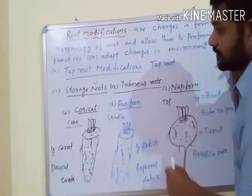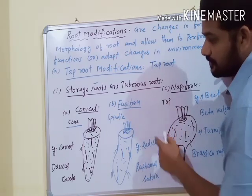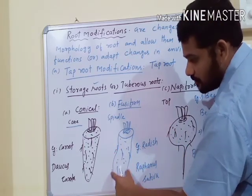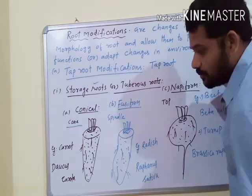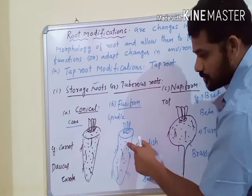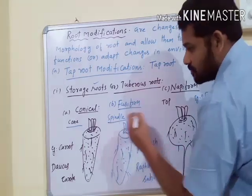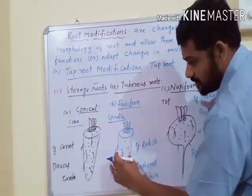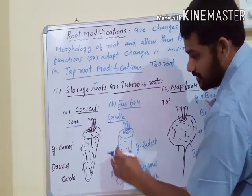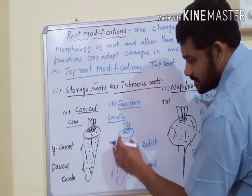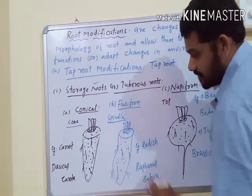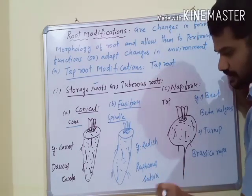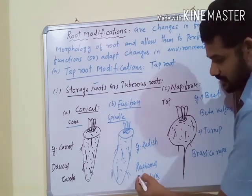The second shape is Fusiform. In Fusiform, the Tap Root or Primary Root, with or without the hypocotyl, stores food material and gives a Spindle Shape — broad at the middle and tapered towards both the base and apex of the root. An example is Radish; the scientific name is Raphanus sativus.